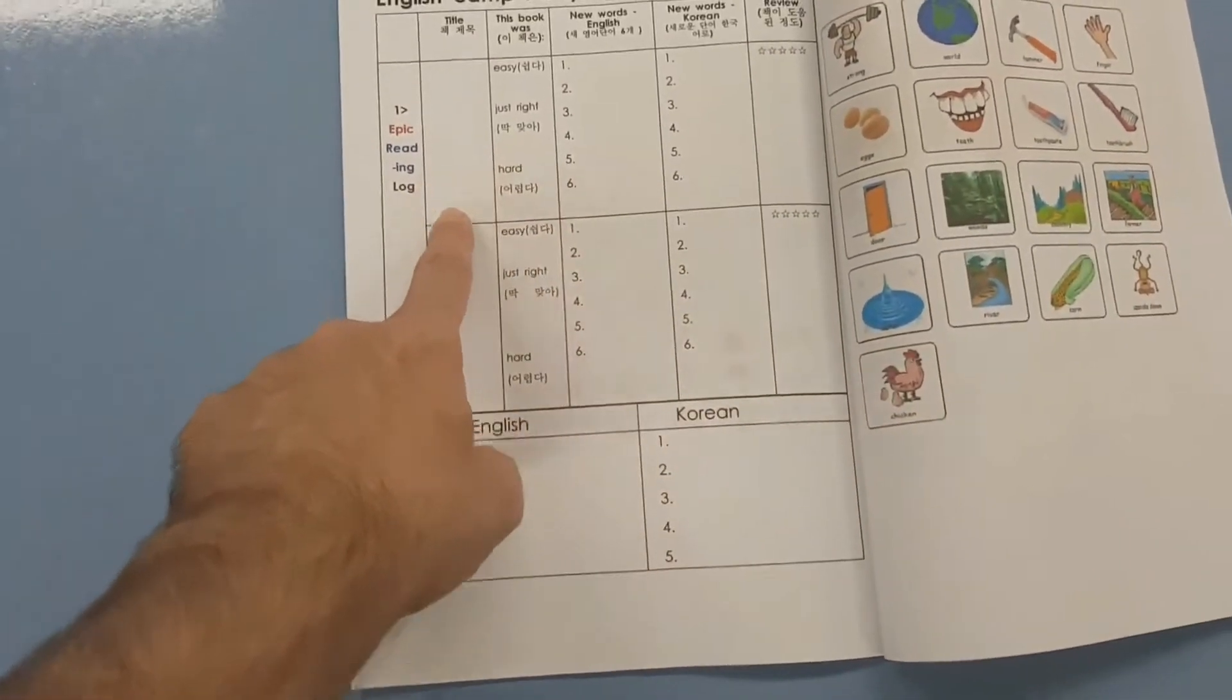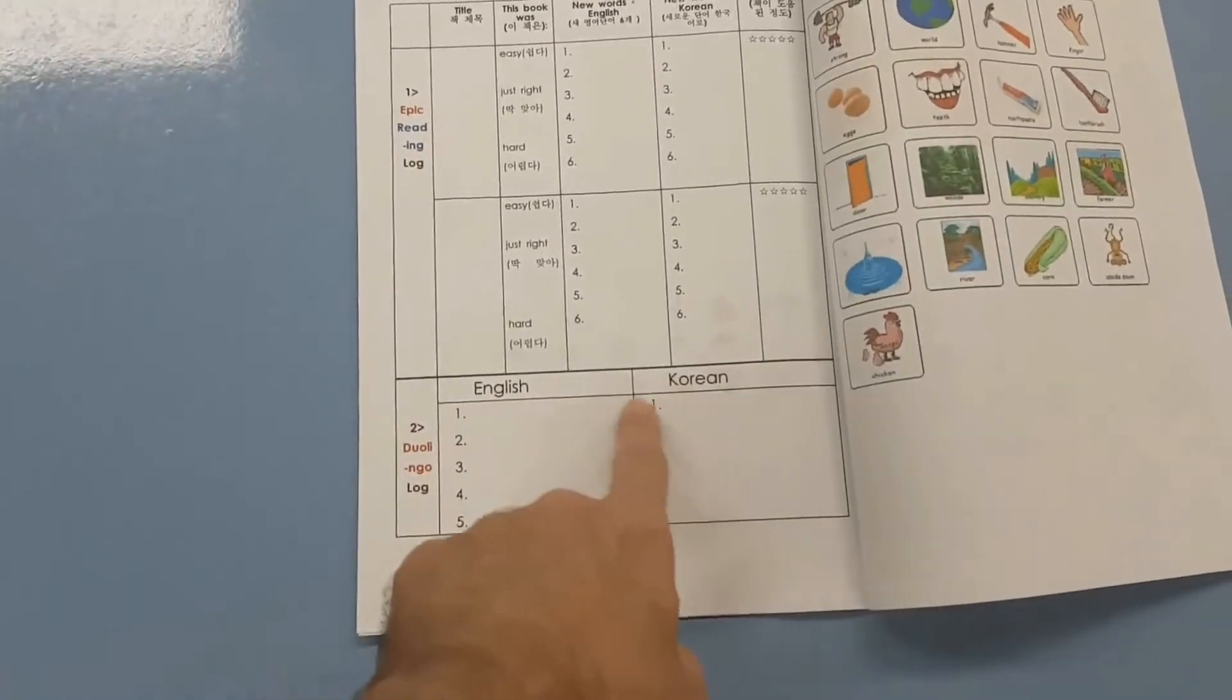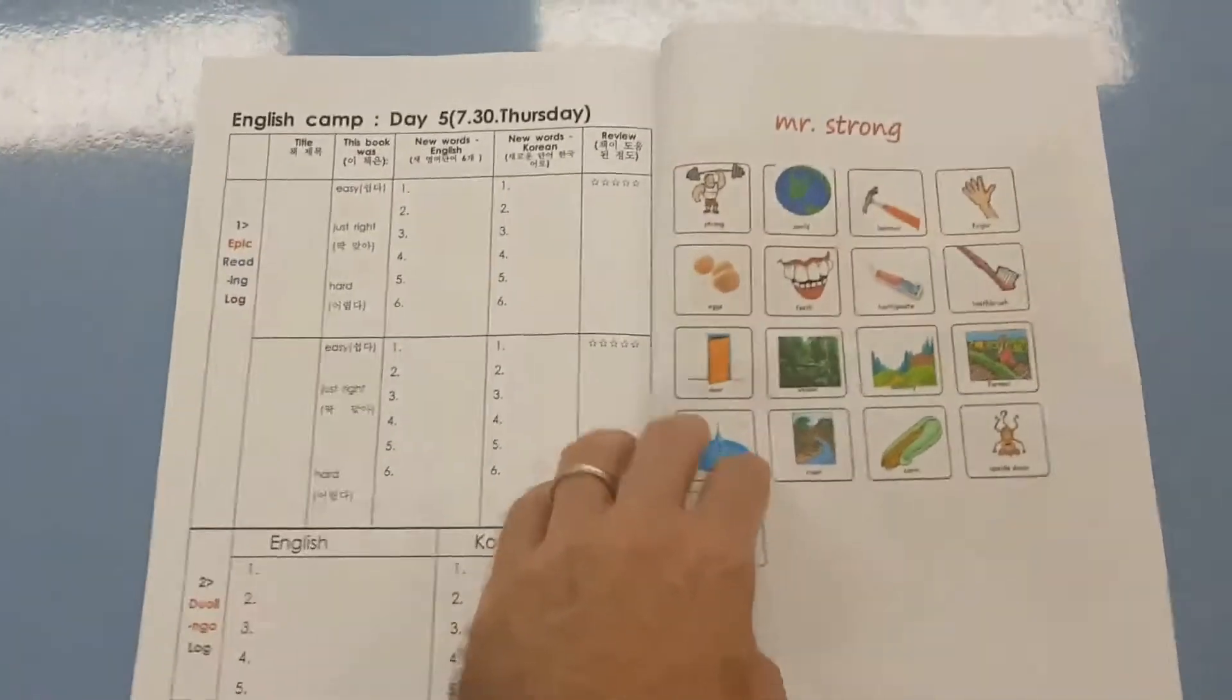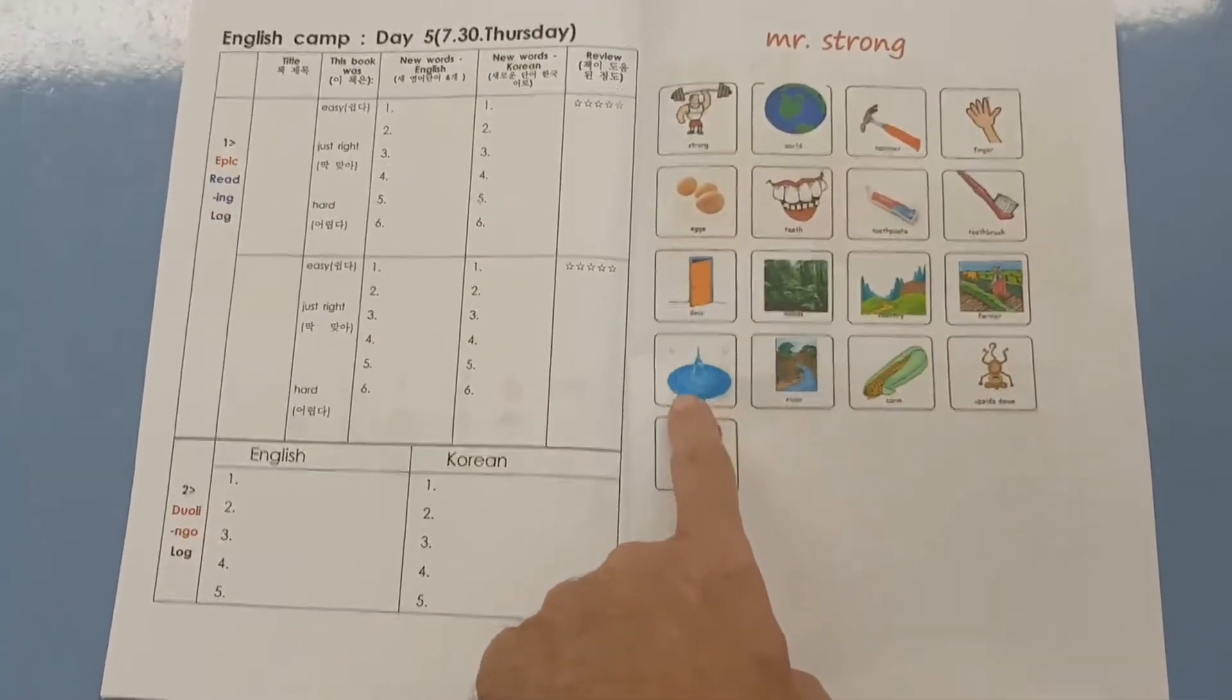Don't forget to write down your epic books and the things you learned on Duolingo. And on the next page, here are all the words that you learned in today's story.